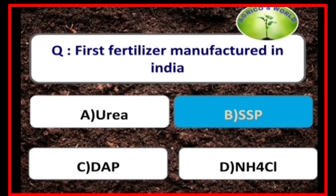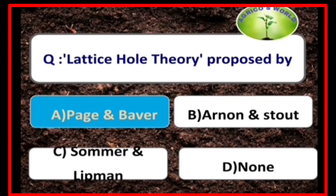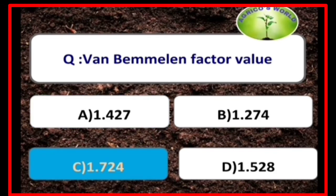Single super phosphate (SSP) is the first fertilizer manufactured in India. Lattice hole theory was proposed by Page and Baver. The Van Bemmelen factor value is 1.724, and it is used to find organic matter: organic matter equals organic carbon multiplied by 1.724.